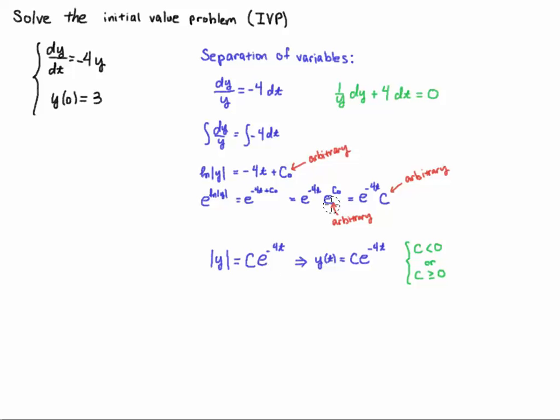Right now as I have it written e to the c naught would have to be positive and if you look here my initial value is a positive number so I'm going to drop the absolute values and you'll see that by the solution here that once you start out positive you'll always remain positive.